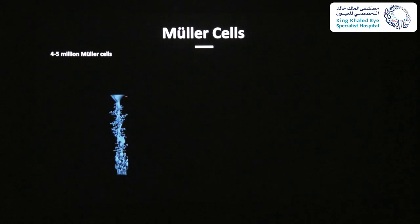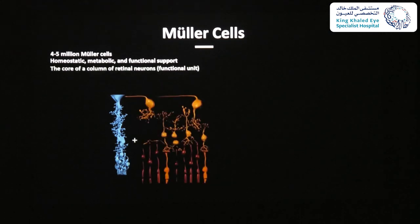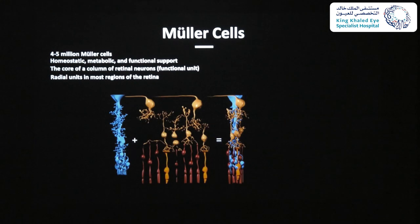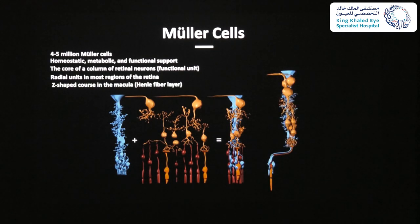The human retina contains about 4 to 5 million regularly arranged Müller cells, and they provide crucial homeostatic, metabolic, and functional support. Each Müller cell constitutes the core of a column of retinal neurons representing the smallest functional unit. If we combine the two parts, we have the straight radial unit found in most regions of the retina. But in the macula, Müller cells display a Z-shaped morphology because the outer processes accompany the centrifugally running photoreceptor axons in the Henle fiber layer.